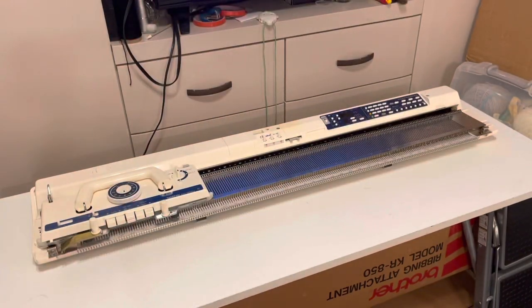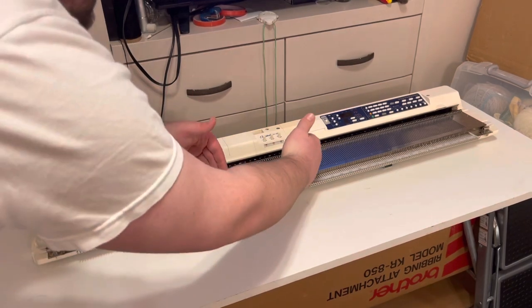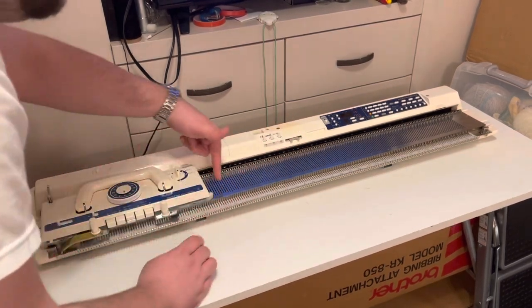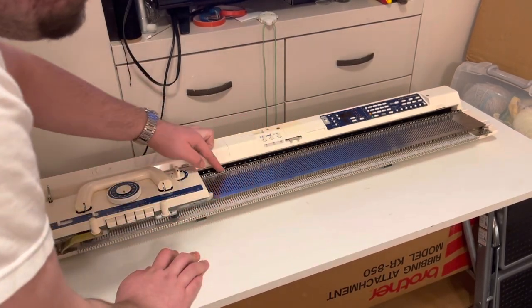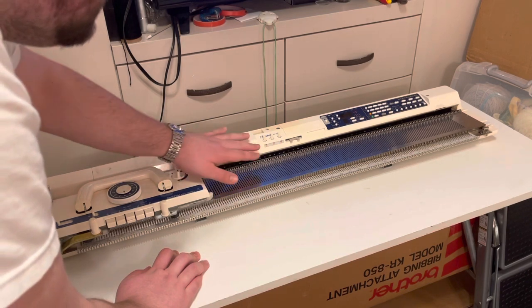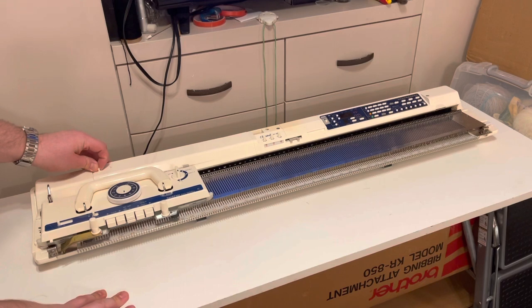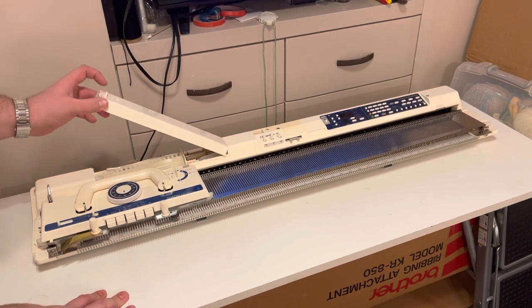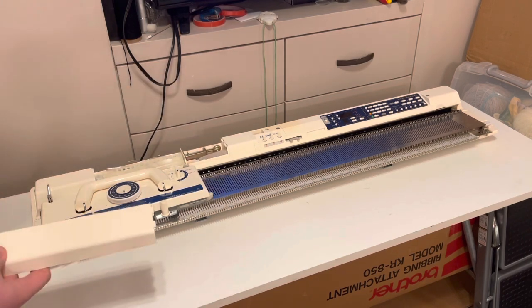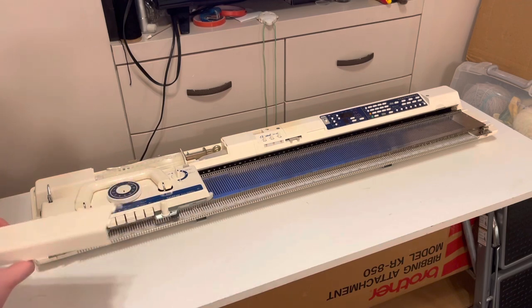So usually there is an accessory box built in or separate to the machine. If it's a separate accessory box it will sit in this area here and fit snugly on this back rail. If it has a built-in accessory box you press this latch in and that reveals the different tools and accessories.